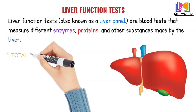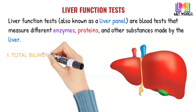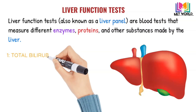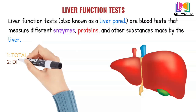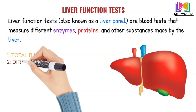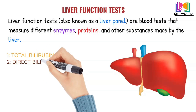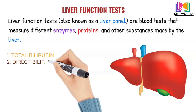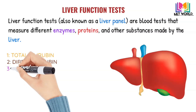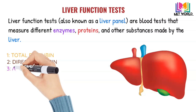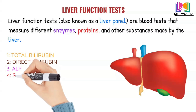Liver function tests include total bilirubin, direct bilirubin, ALP (alkaline phosphatase), SGPT also called ALT, SGOT also called AST, total protein, albumin, and globulin. We will discuss each one by one.